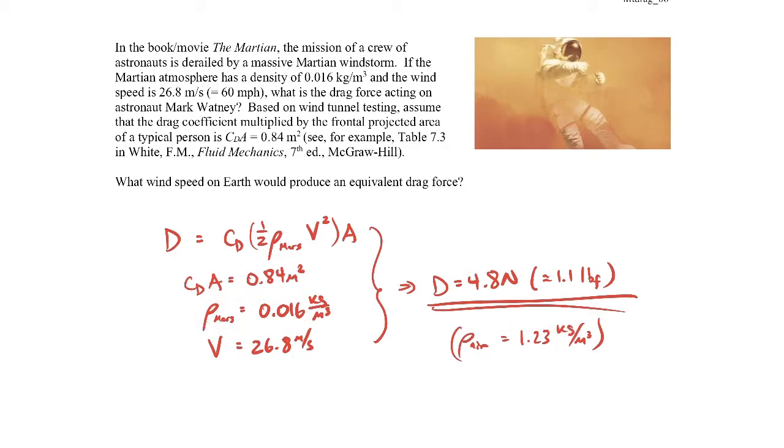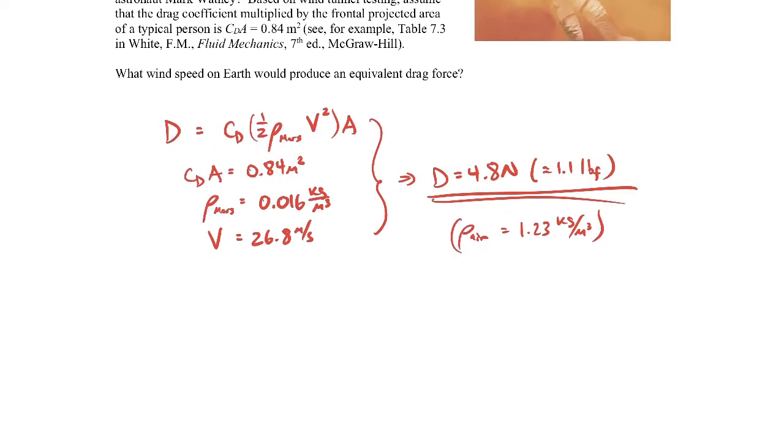Now the question is, what is the equivalent wind speed on Earth that would produce that same drag force? To find that, we're going to use this value for the drag force and use this expression to find what the velocity is on Earth using the density of air on Earth.